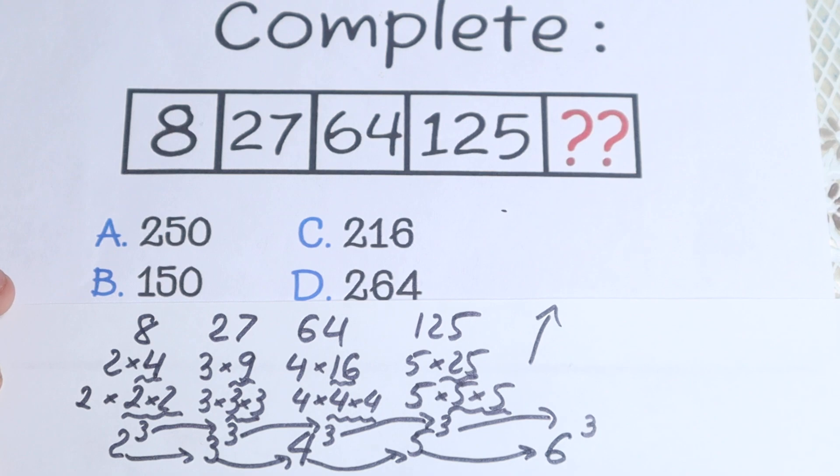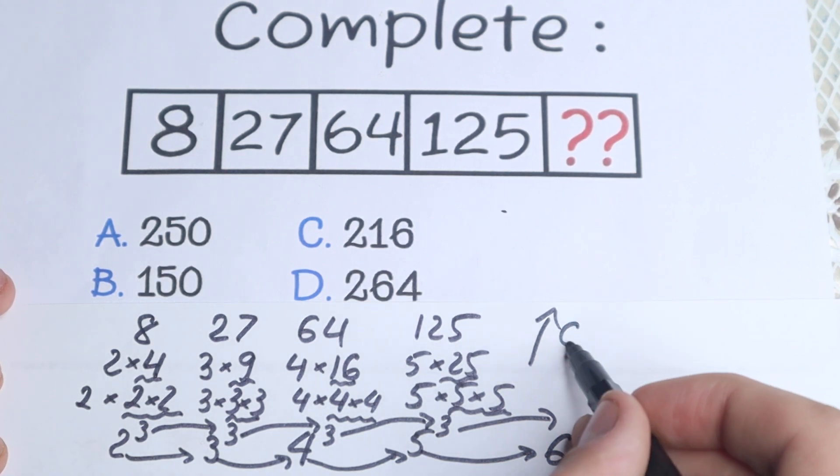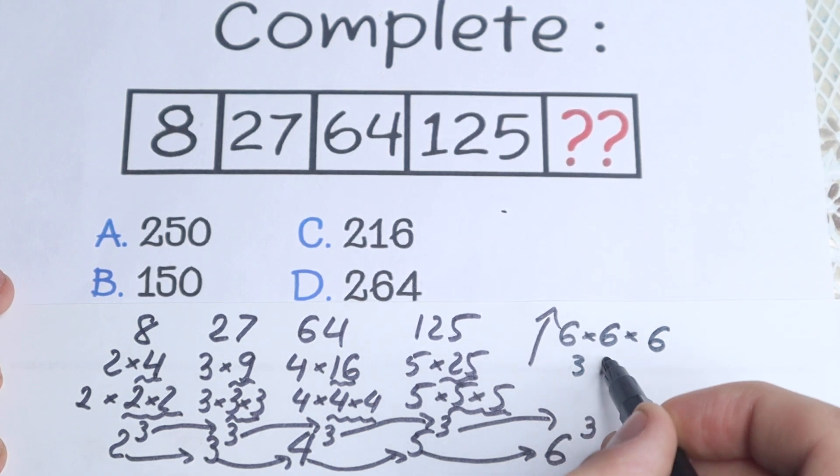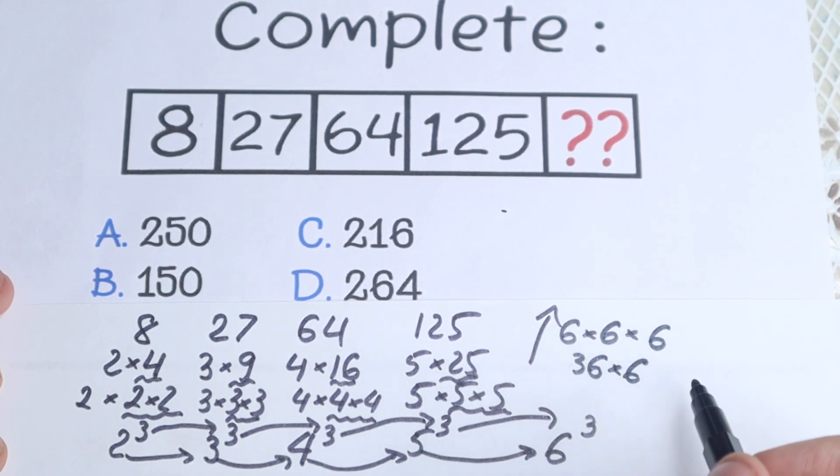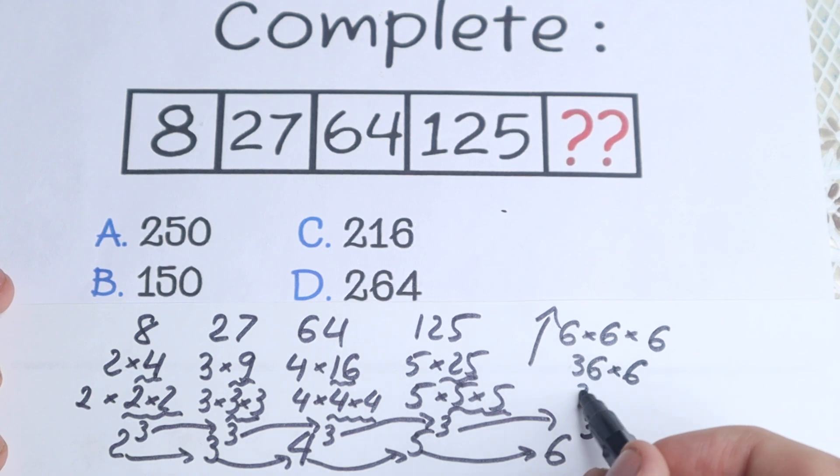So our pattern will be the next one: 6 cubed. What about 6 cubed? 6 times 6 times 6, that's 36 times 6, which is equal to 216.